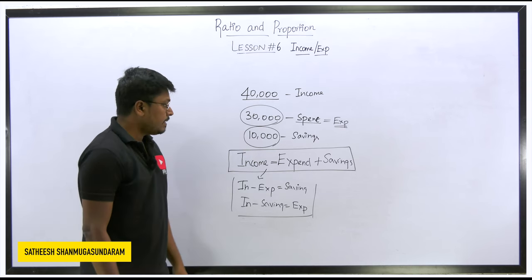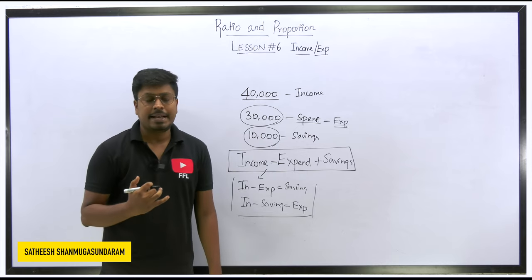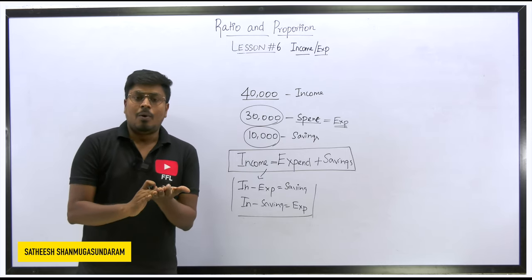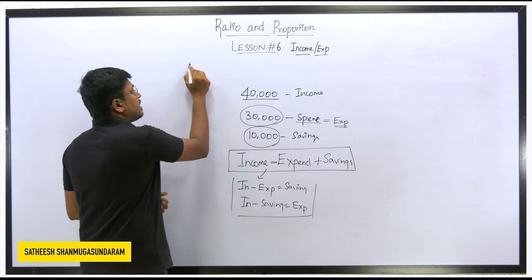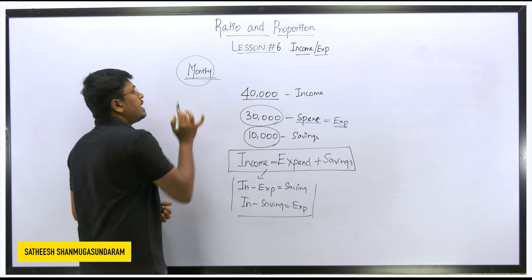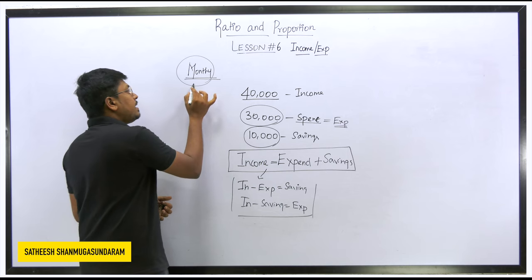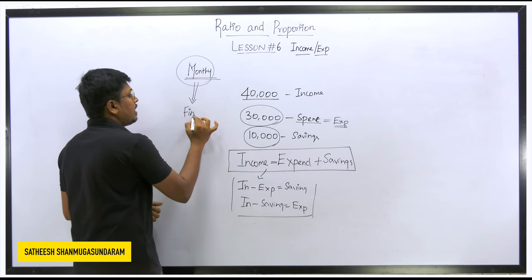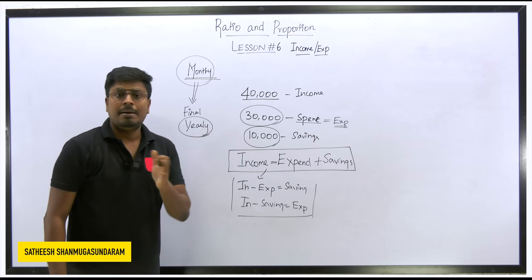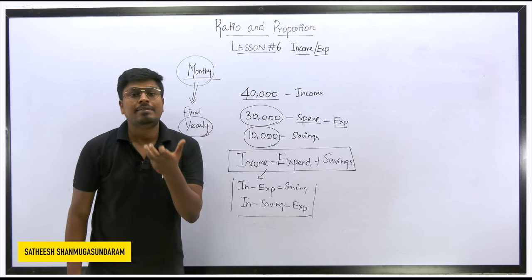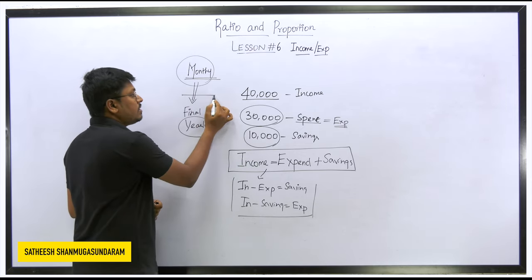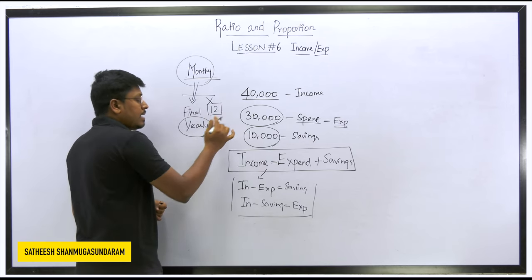Another important thing to remember in income and expenditure questions: be careful when checking the final answer against the options. Most students make this mistake in exams — all the data in the question will be given in terms of monthly income, monthly expenditure, and monthly savings, but the final answer will be asked in terms of yearly. After finding your answer, multiply by 12 to convert to yearly income, expenditure, or savings.